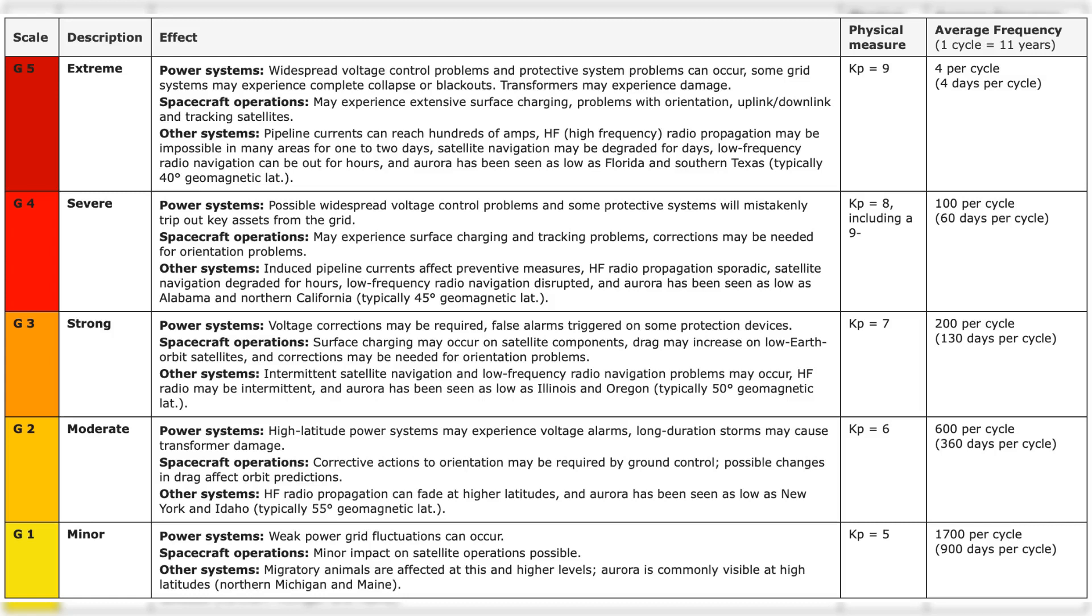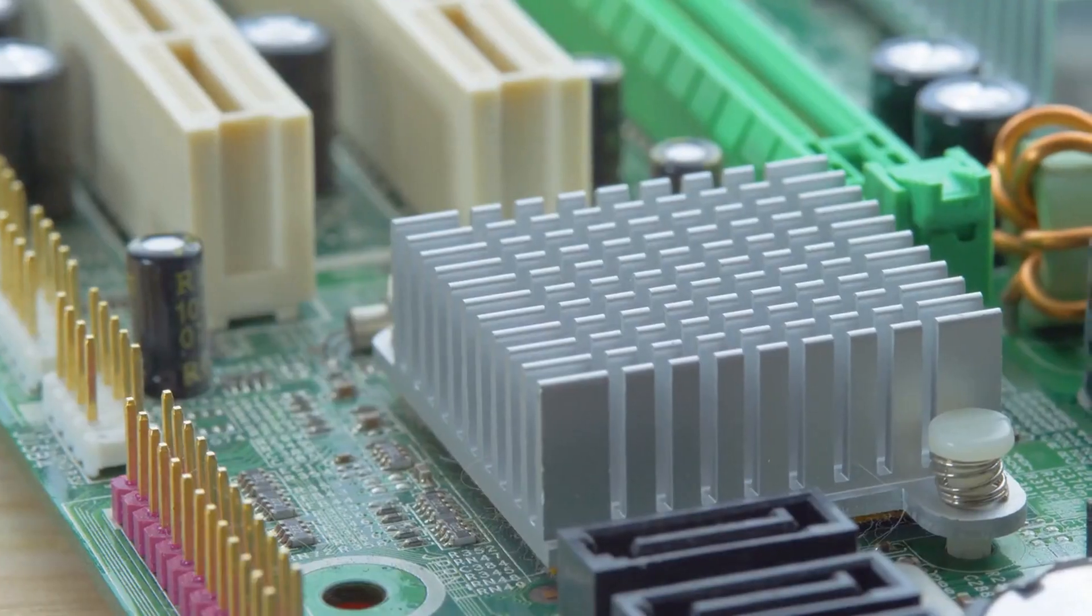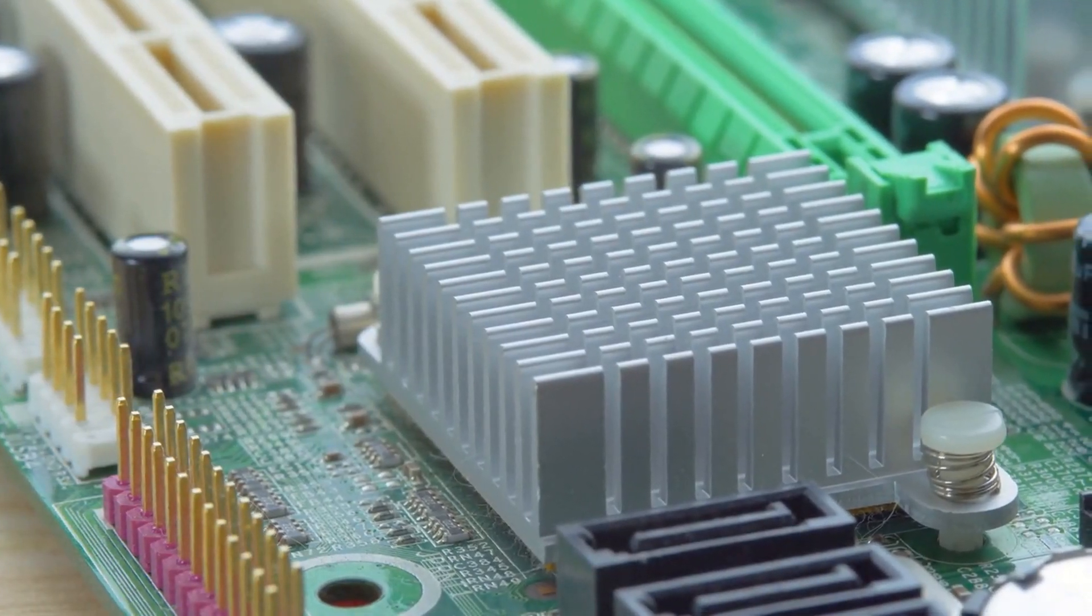This leaves ample time for a G5-class geomagnetic storm, which can cause extensive damage to GPS, mobile phone networks, internet connectivity, and power grids. It can also lead to malfunctioning of electronic devices.